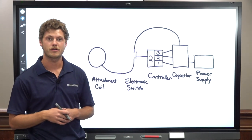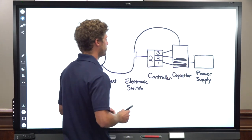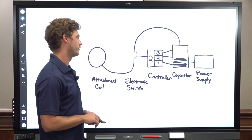First, we have a power supply charging up a capacitor. In this example, the machine has three power settings and it is set on power level two.